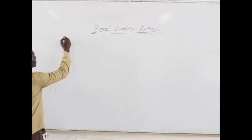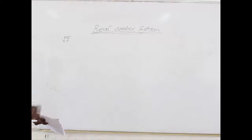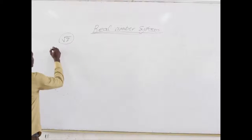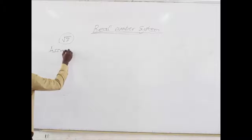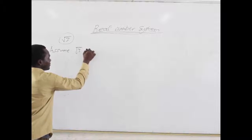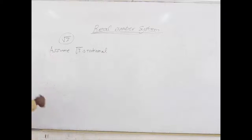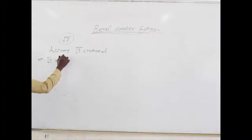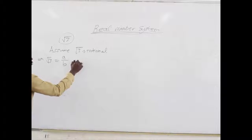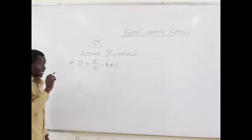Let's start with root 3. We all know root 3 is an irrational number, but how can we determine that? First, let's assume that root 3 is rational. We said all rational numbers can be written in the form A over B, where B is not equal to zero, and A over B is a fraction.